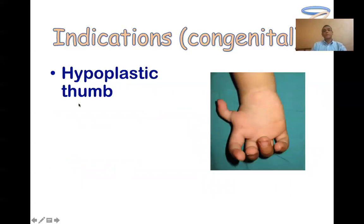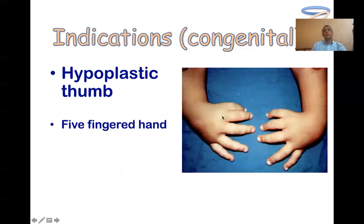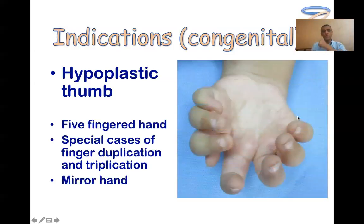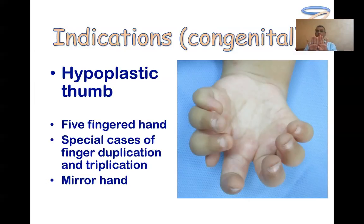The indications — discussing only congenital indications — include a severely hypoplastic, non-functional thumb, where we take the index and transform it into a thumb. Another indication is a five-fingered hand with four or five fingers but without a thumb, requiring the most radial finger to be transformed. For example, seven fingers with a severely hypoplastic seventh one, or ulnar dimelia (mirror hand) with about seven or eight fingers but no thumb — we excise the extra digits and take the best-developed, most radial finger to pollicize.